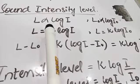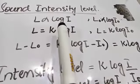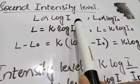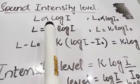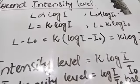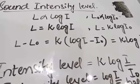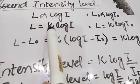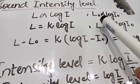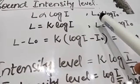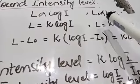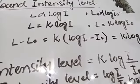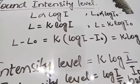Loudness L is directly proportional to the logarithm of intensity I. We can remove the proportional sign by introducing a proportionality constant K, giving L = K log I.